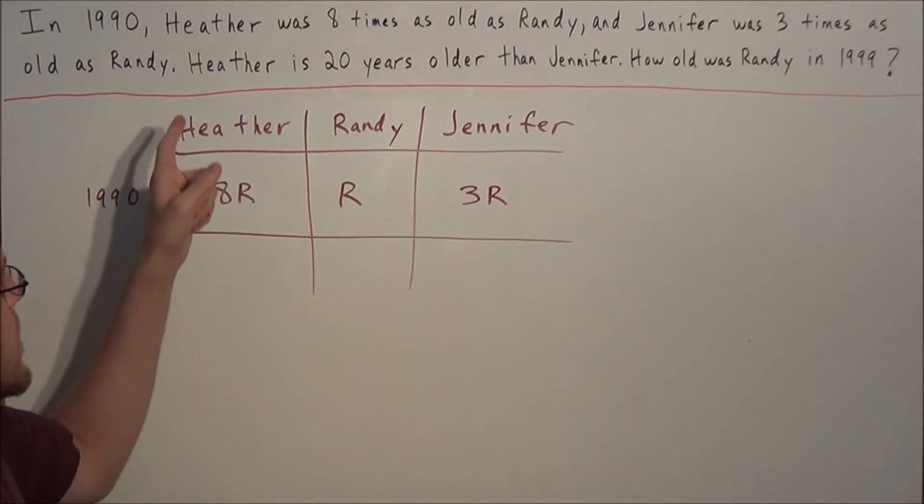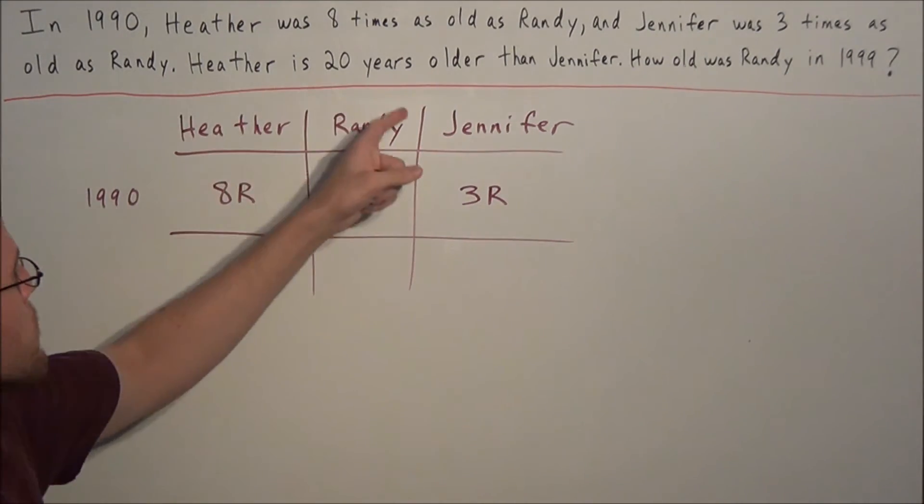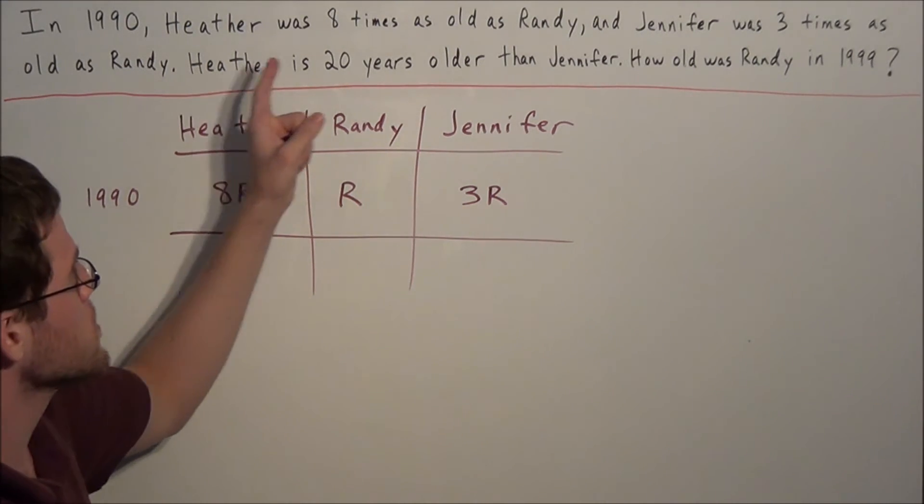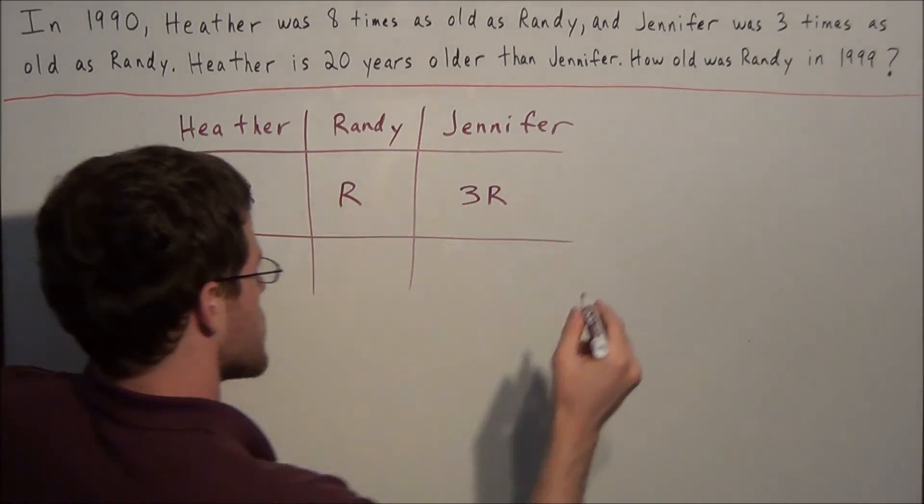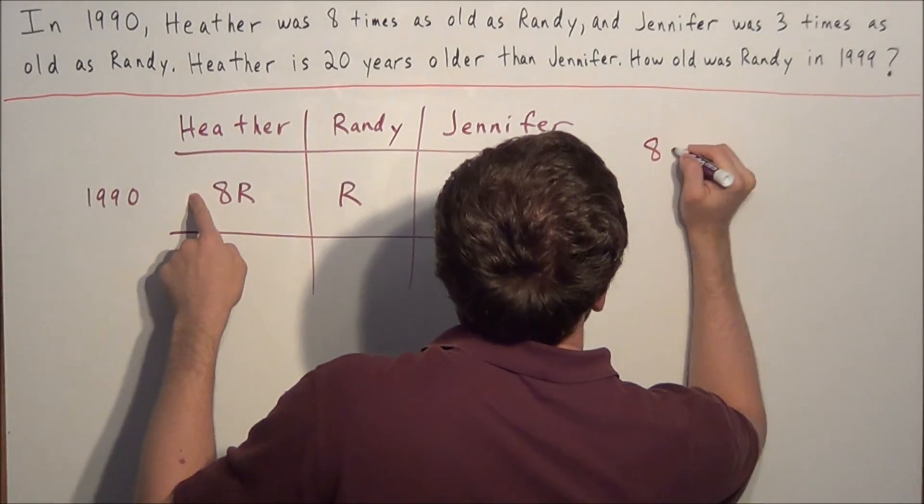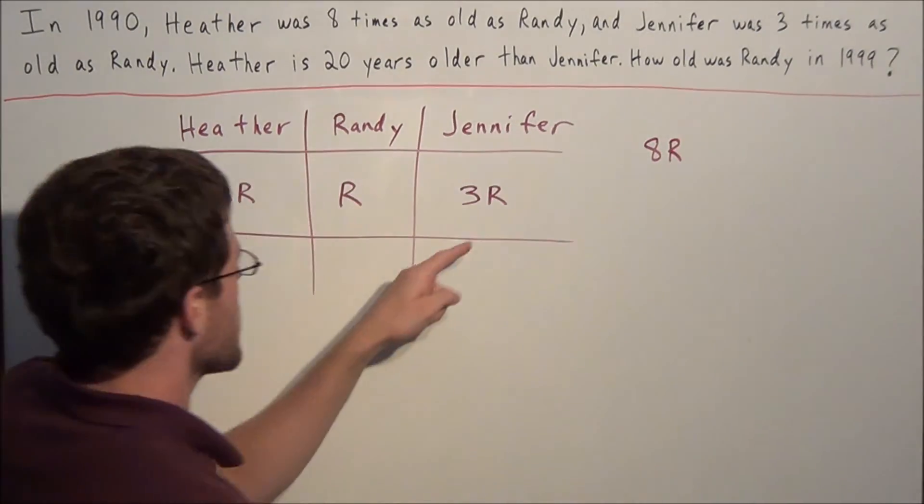So now the second sentence will allow us to find the value of r. They're telling us now that Heather is 20 years older than Jennifer. So if we look at Heather's age, which is 8r, and we look at Jennifer's age,